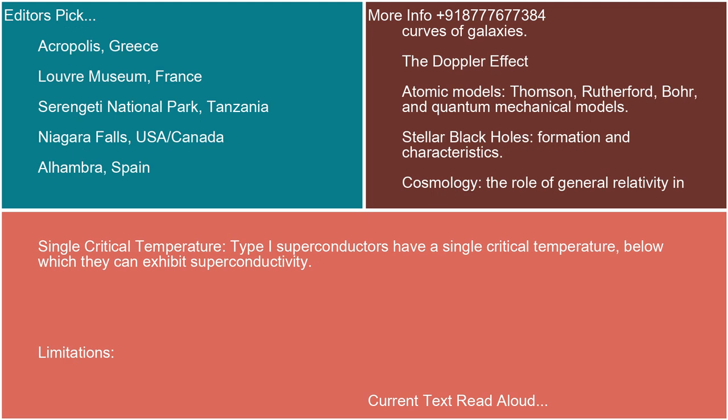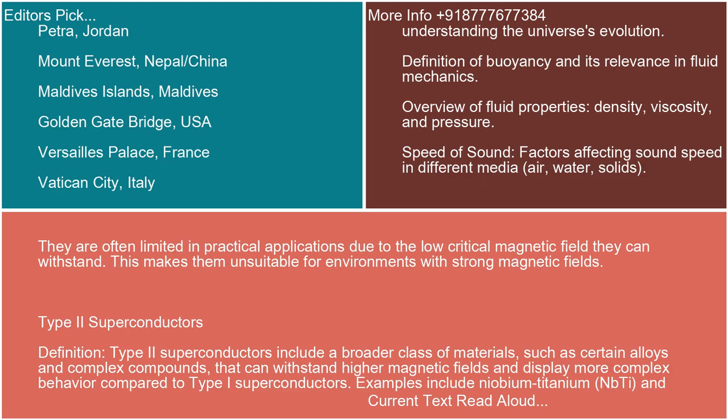Single critical temperature: Type I superconductors have a single critical temperature below which they can exhibit superconductivity. Limitations: they are often limited in practical applications due to the low critical magnetic field they can withstand, making them unsuitable for environments with strong magnetic fields.